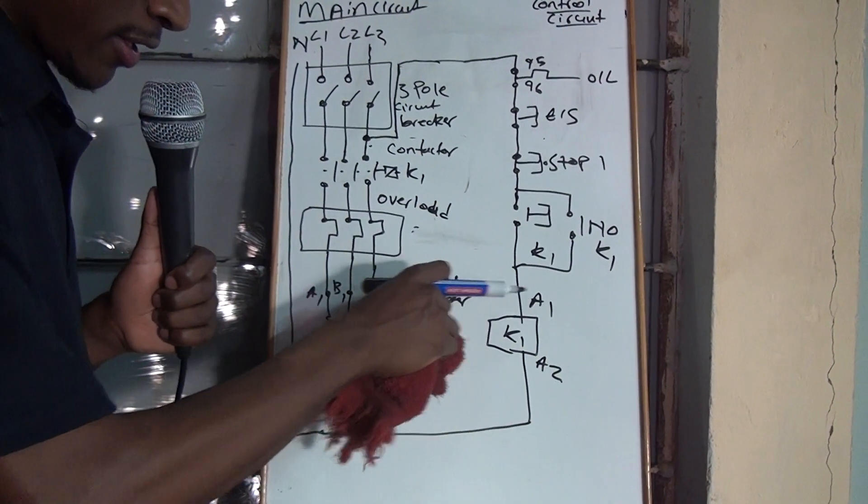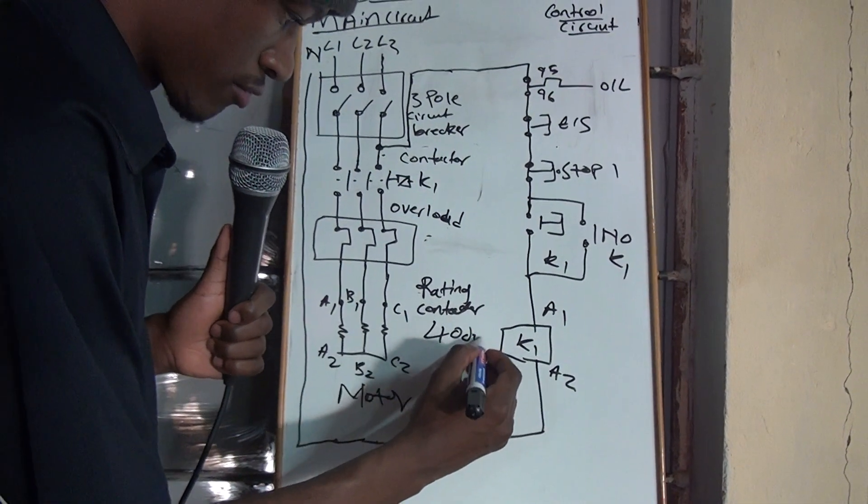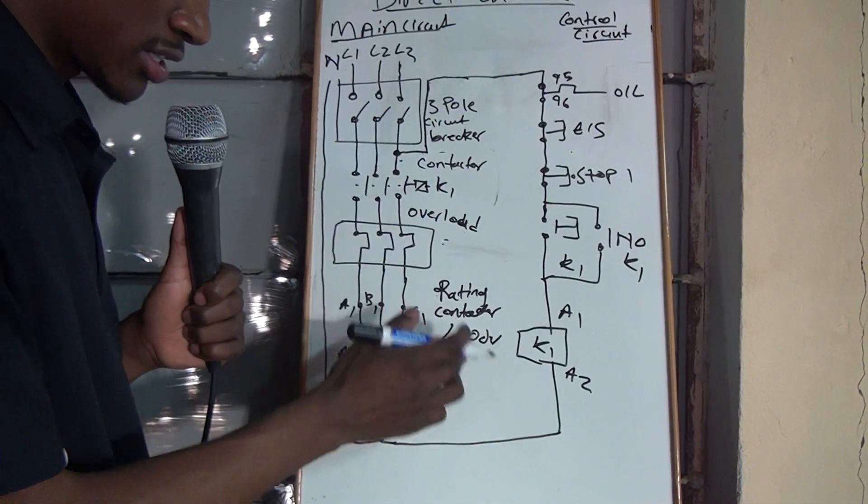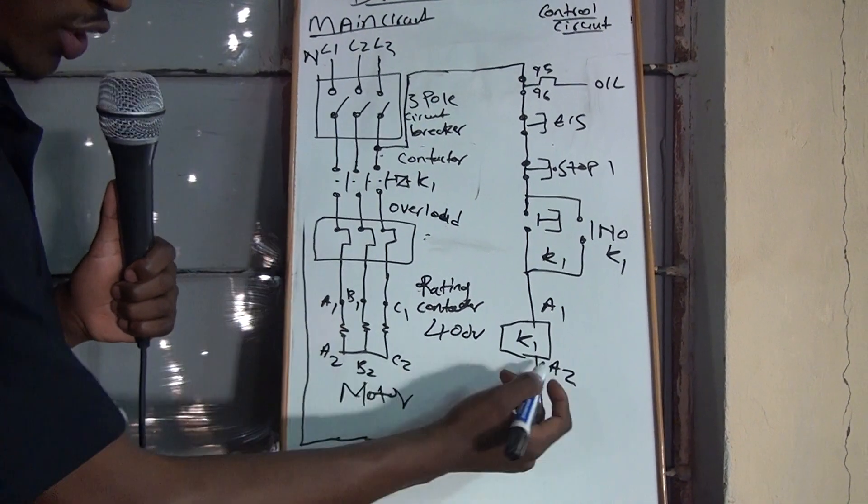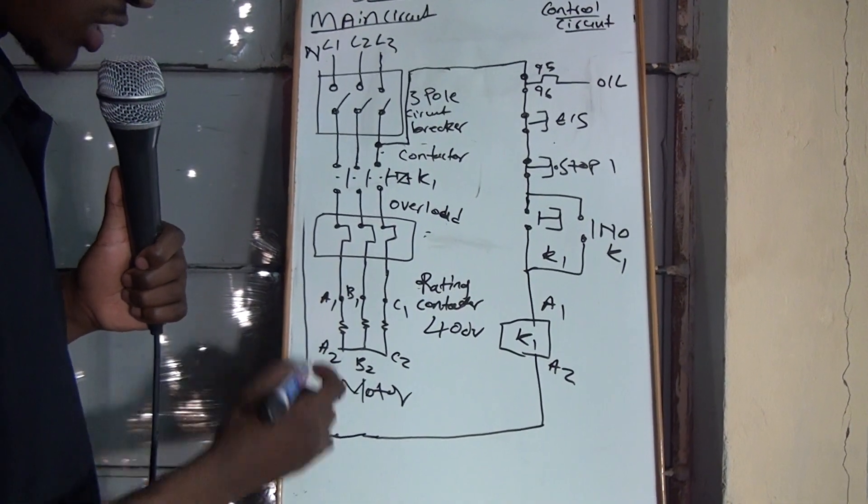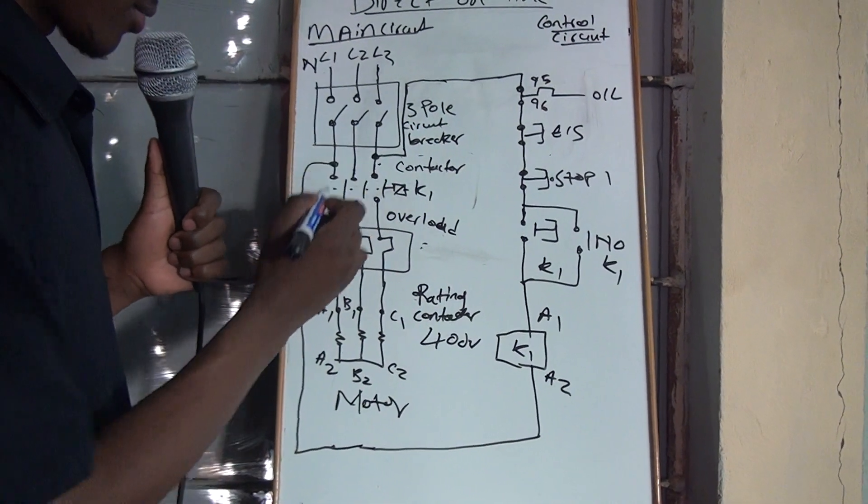But from 400 volts, if the contactor rating is 400 volts, then now, you no longer connect your A2 on the neutral. You connect it on one of the lines.